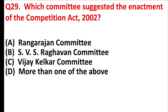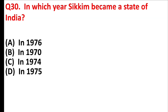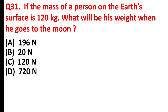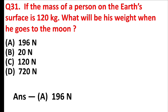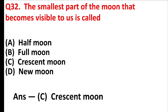Which committee suggested the enactment of the Competition Act 2002? Answer is Option B: S.V.S. Raghavan Committee. In which year did Sikkim become a state of India? Answer is Option D: In 1975. If the mass of a person on Earth's surface is 120 kg, what will be his weight when he goes to the moon? Answer is Option A: 196 Newton. The smallest part of the moon that becomes visible to us is called Answer is Option C: Crescent moon.